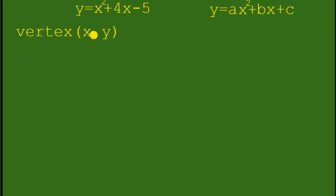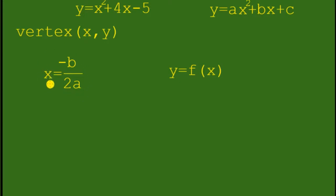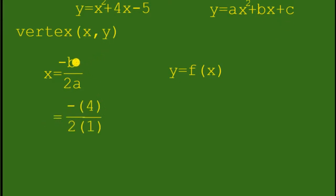Now we will find the value of x first, then we will find the value of y. We have here the formula to find the value of x: x equals negative b over 2a. From the standard form, b is 4 and a is 1, so we substitute to get negative 4 over 2 times 1.